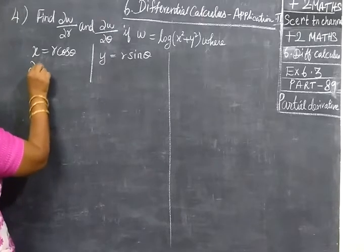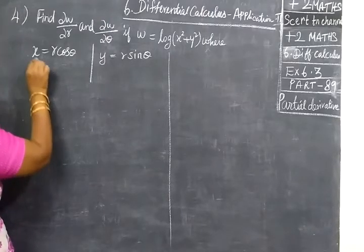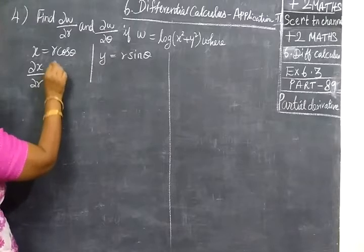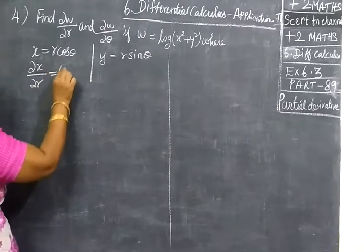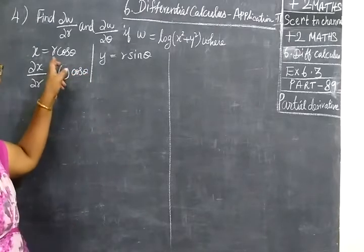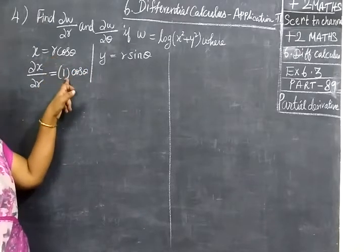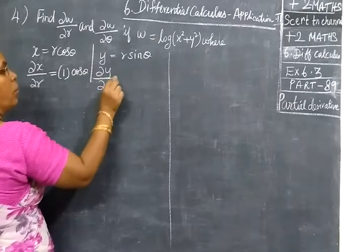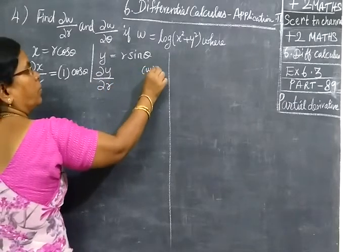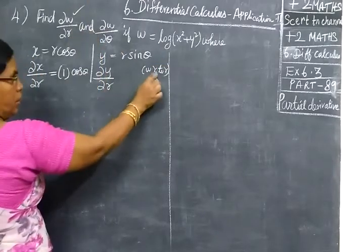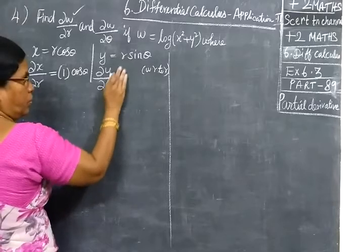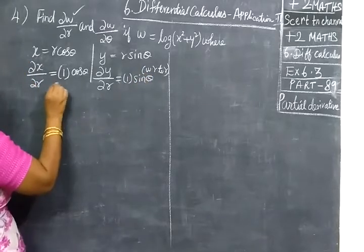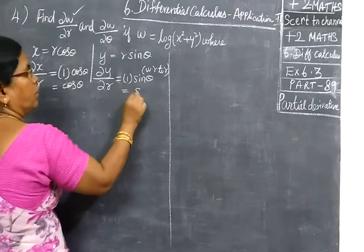First we find ∂x/∂r — the partial differentiation of x with respect to r. With respect to r, we get cos θ. So ∂x/∂r = cos θ. Next is ∂y/∂r. With respect to r, r becomes one, so we get sin θ. Therefore ∂y/∂r = sin θ.